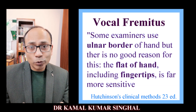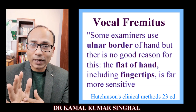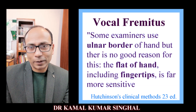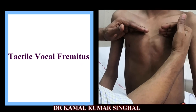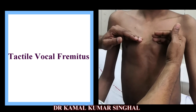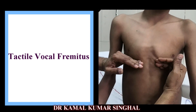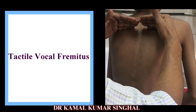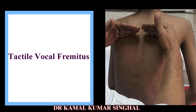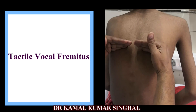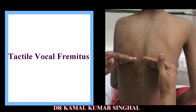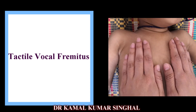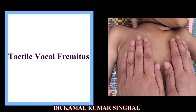Some examiners use the ulnar border of the hand, some use the flat of the hand, and some use the fingertips — all are almost equally sensitive, so it is about practicing a particular technique. Feel for the vibrations with both hands placed on either side of the chest to assess asymmetry. Tactile fremitus is decreased when there is air or fluid in the pleura — as in pneumothorax, hydrothorax, pyothorax, or hemothorax. Atelectasis or collapse also decreases fremitus, while consolidation of a lobe increases tactile fremitus.